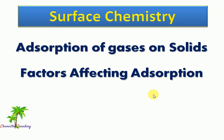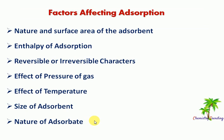Welcome to Chemistry Trending channel. Today's topic is engineering chemistry, Unit 2: surface chemistry. We will discuss the factors affecting adsorption of gases on solids. These factors include: nature and surface area of the adsorbent, enthalpy of adsorption, reversible and irreversible characters, effect of pressure of gas, effect of temperature, size of adsorbent, and nature of adsorbate. Each topic will be discussed one by one.